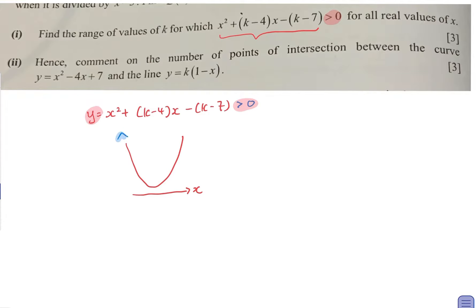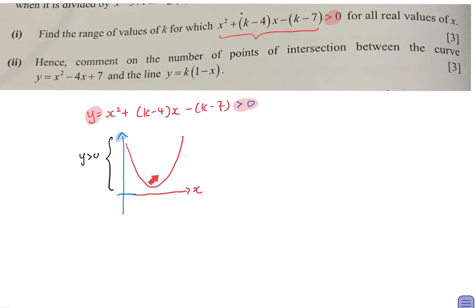If your graph is more than zero, this is the portion where y is entirely positive. It means that your graph is not cutting the x-axis — it is above the x-axis — in order for y to be positive.